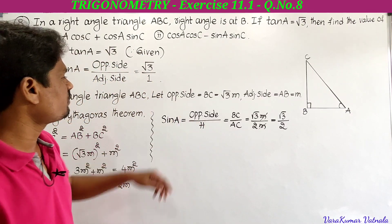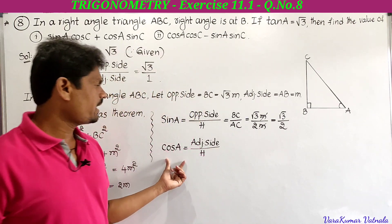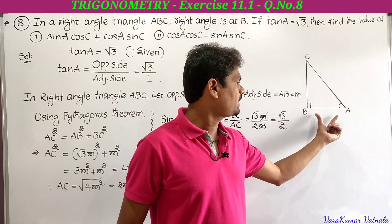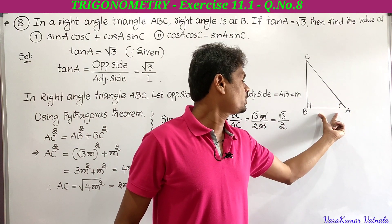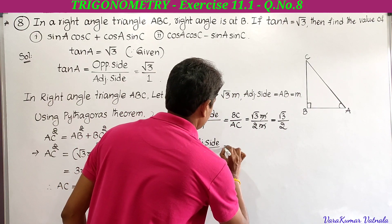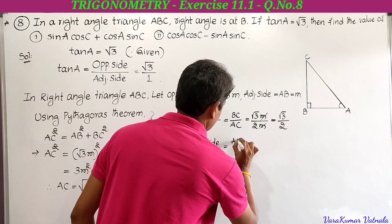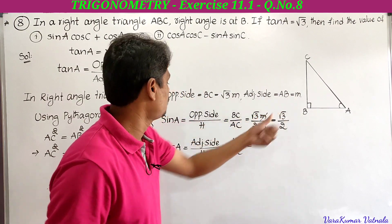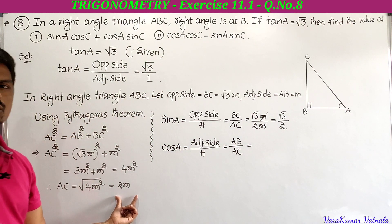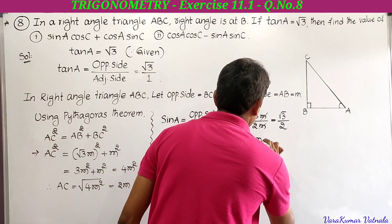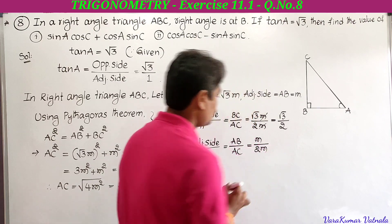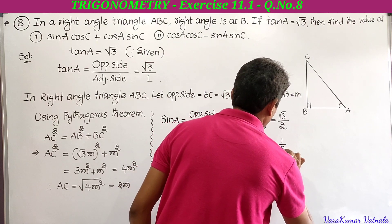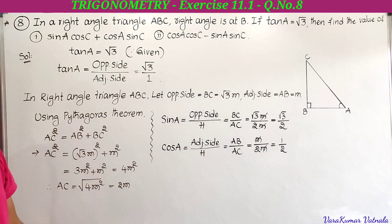Cos A equals adjacent side to angle A divided by hypotenuse, that is AB by AC, which is M by 2M. The M's cancel giving cos A equal to 1 by 2.